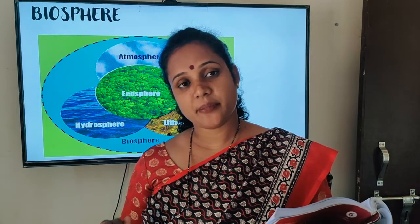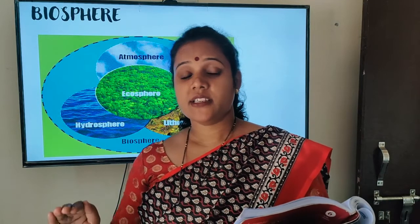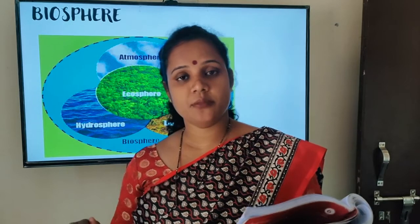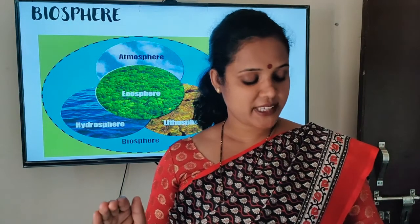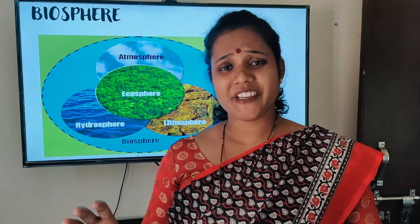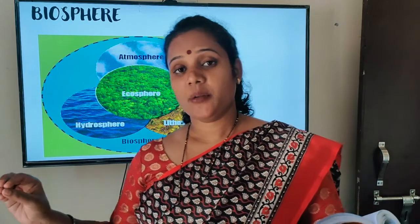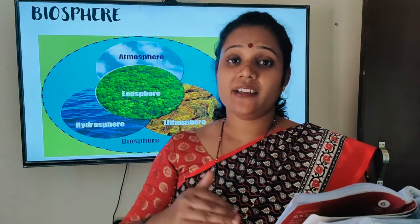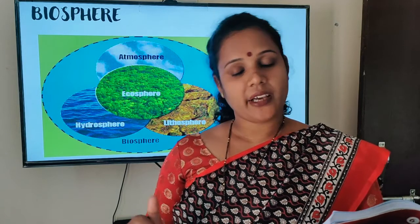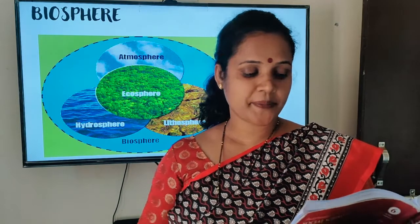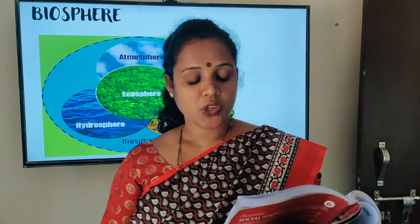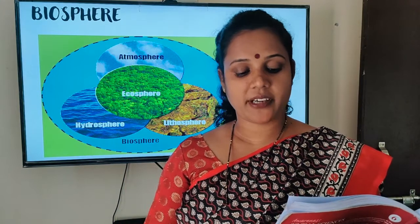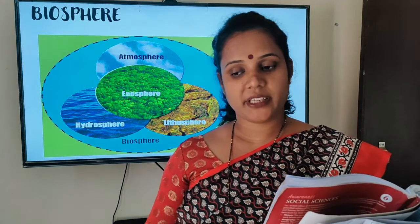Human beings, plants, and animals each have a separate system to live in. Different species have adapted to different environments — species meaning varieties of animals and plants. Plants and animals depend on the three fundamental components of earth provided by the lithosphere, hydrosphere, and atmosphere. They may live in water, on land, or in both.